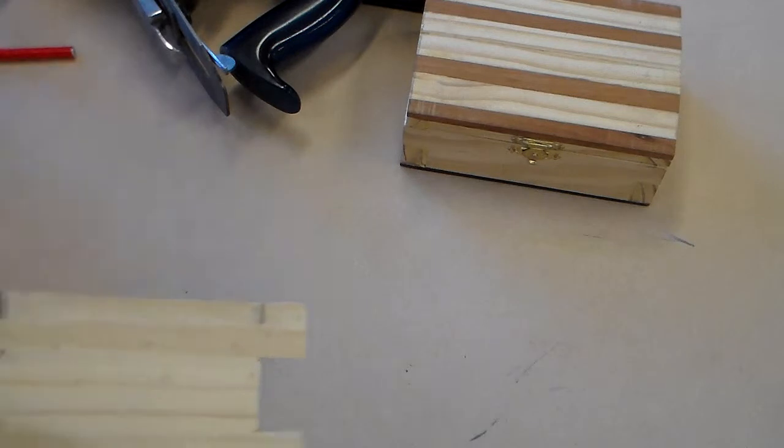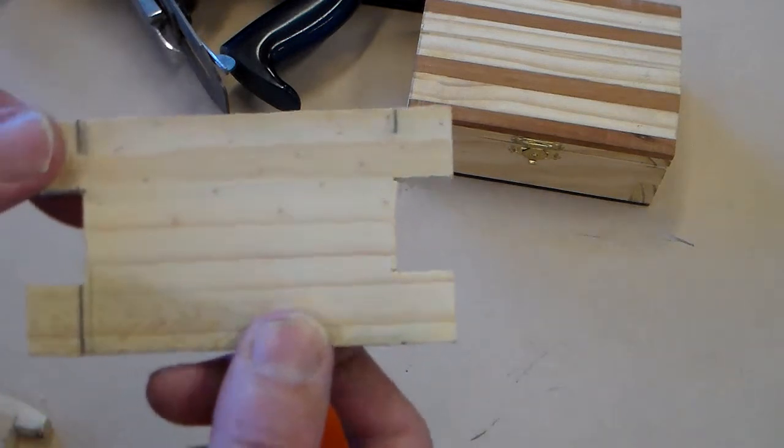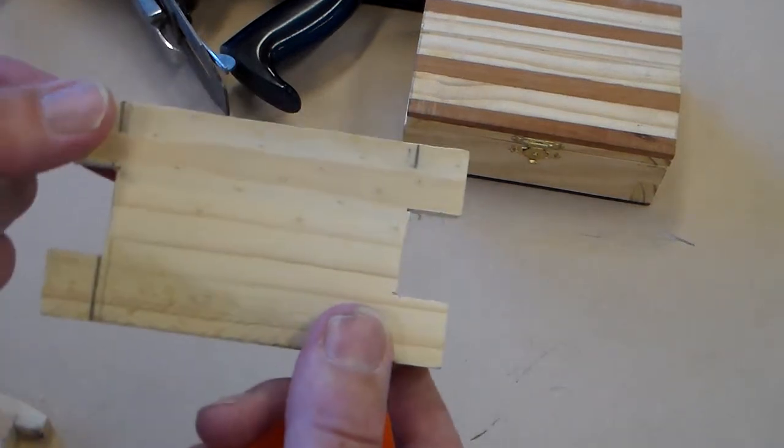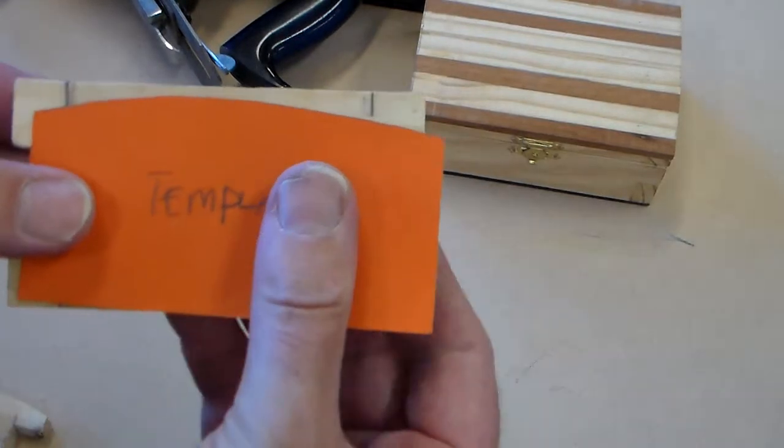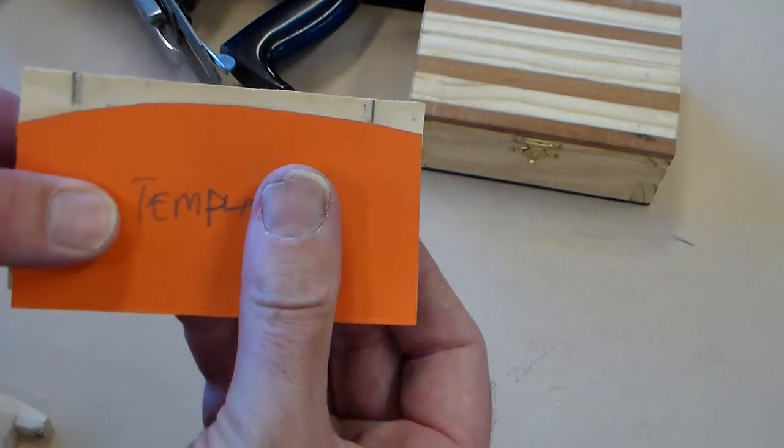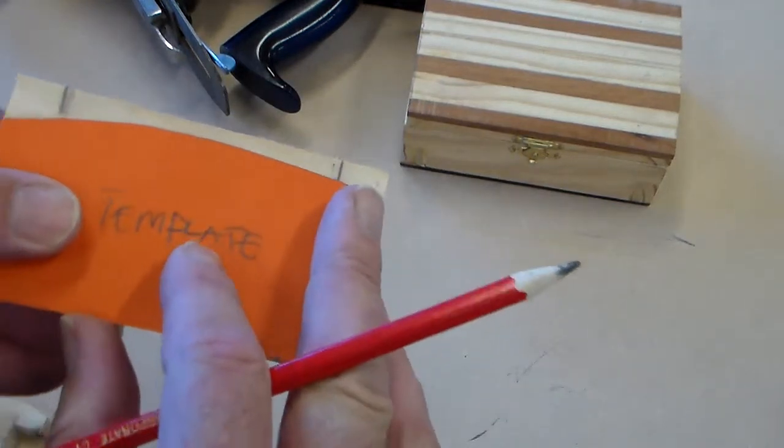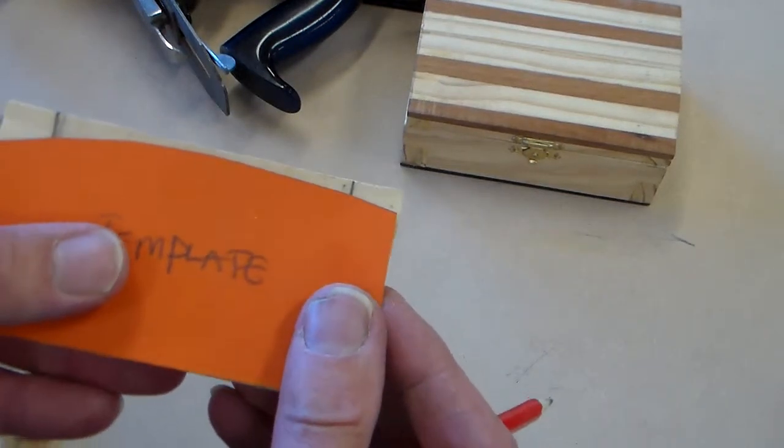So we take the ends of our box, there's the end of the box, our joints have all been cleaned up, we're ready to fit it together and we need this. This is a template. A template is something we use to help us draw a shape repeatedly the same.